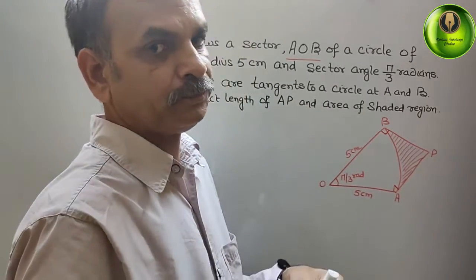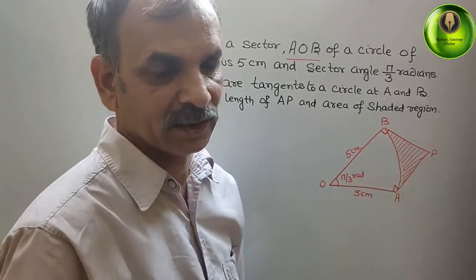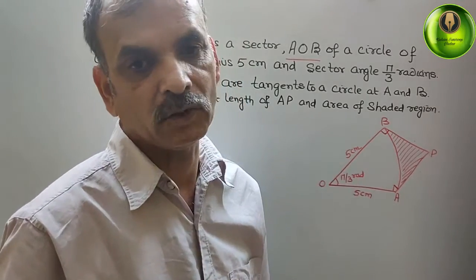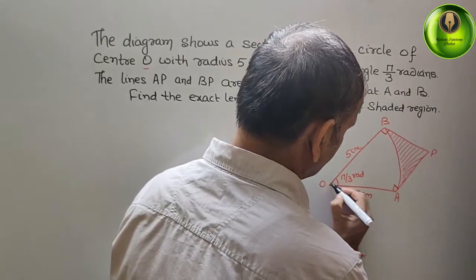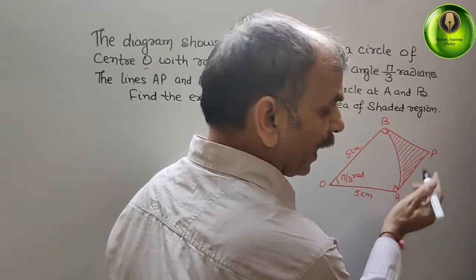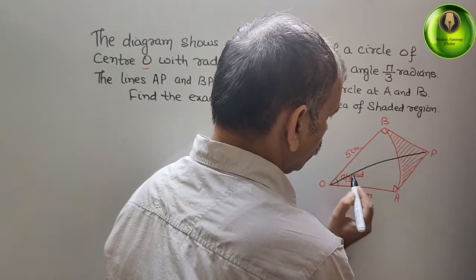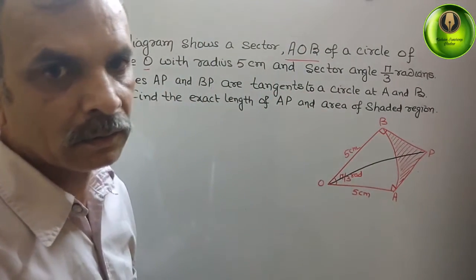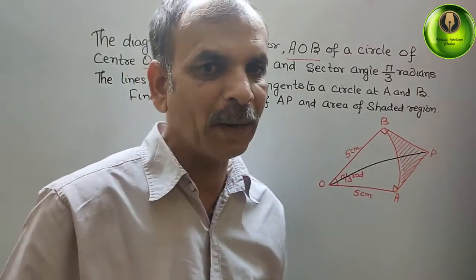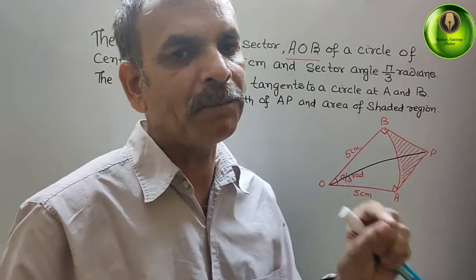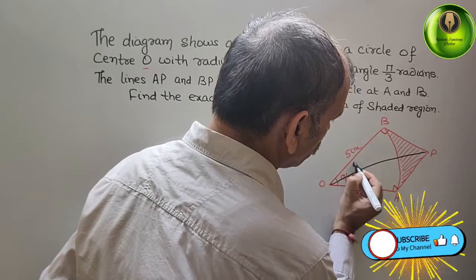We need to find AP and the shaded region. We will make a construction by joining O and P with a straight line. This line OP bisects the sector angle π/3 into two equal parts, so each part is π/6. We get π/6 on each side.